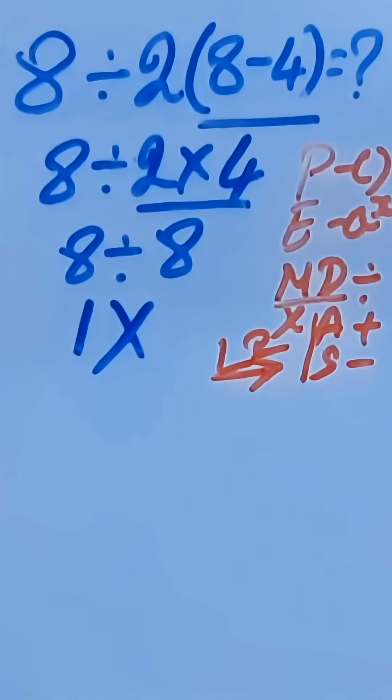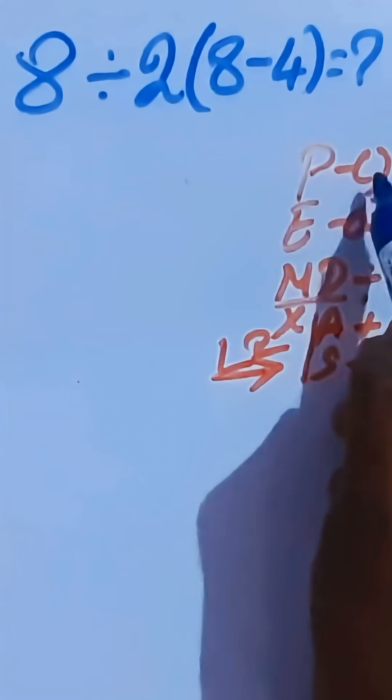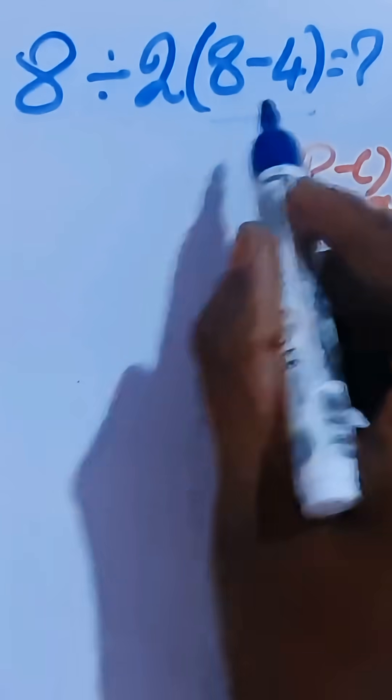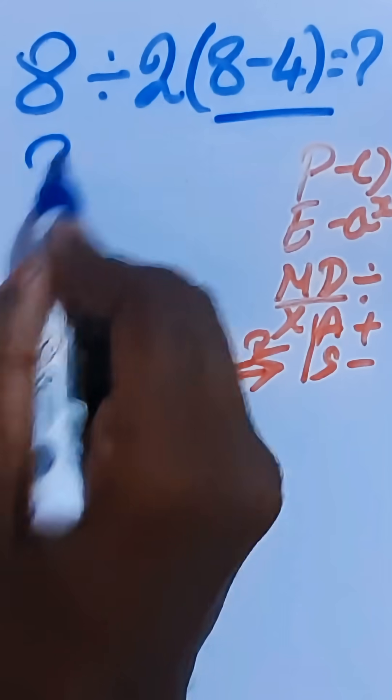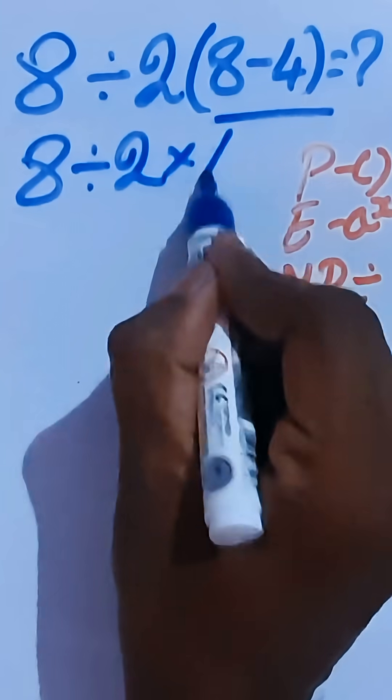Now we're going to solve this problem the correct way using the order of operations PEMDAS. Here, as per PEMDAS, this bracket is first, so we're going to solve this first. 8 divided by 2 times this is 4.